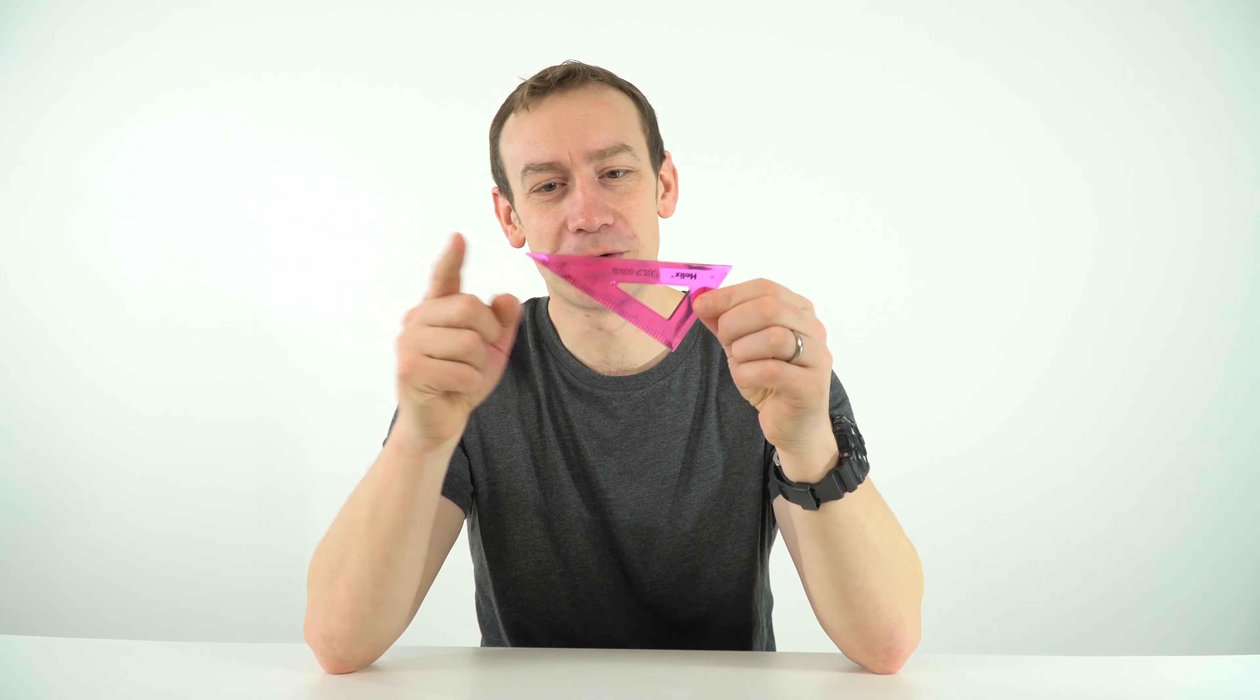So the set square is just this kind of triangular thing with a right angle at the bottom, and it's got three main uses in physics.